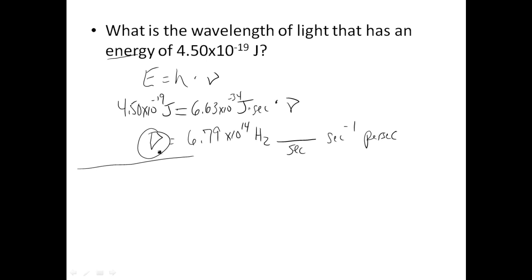Once you know the frequency, now you can use the speed of light to calculate wavelength. So, speed of light equals wavelength times frequency. Speed of light is a constant. It's always 3.0 times 10 to the 8th meters over second. Wavelength is going to be what we're solving for, so there's a variable. And then, we're going to take the frequency that we just got above, 6.79 times 10 to the 14th.